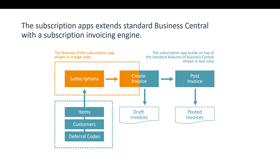The main change is that we've made the subscription list and a subscription setup, and then we've made a small tweak where we expand the create invoice function. But when you create the invoice you still get a standard draft invoice and it will be in the normal list, and when you post it will still be a posted invoice in the same list as everything else.